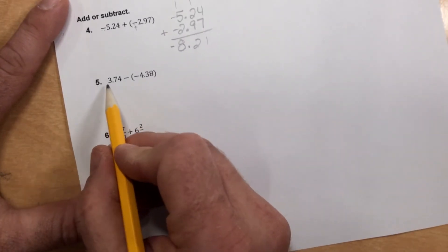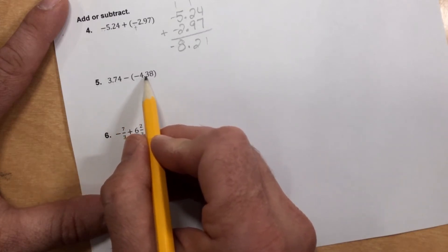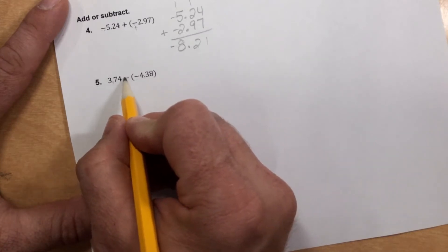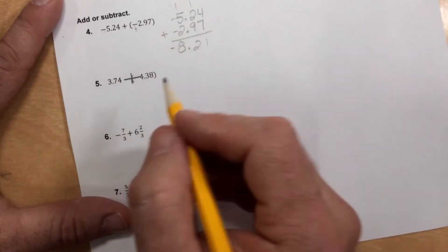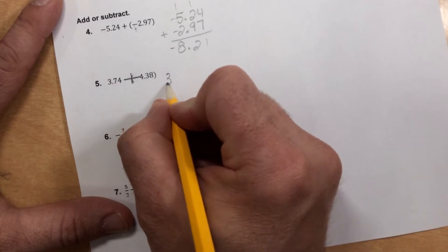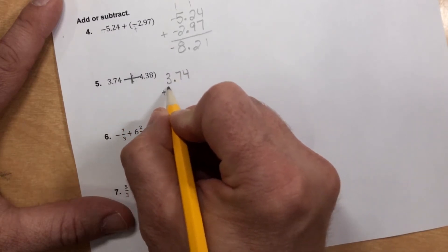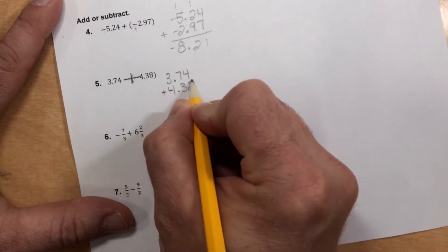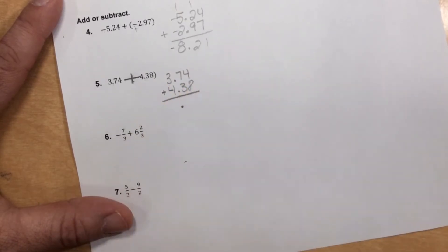Number 5, 3.74 minus a negative 4.38. Remember, we take those two negatives and we make them a big plus. So now what we're doing is just 3 and 74 hundredths plus 4 and 38 hundredths. I'll let you add those together, remembering, of course, to drop your decimal straight down into your total there, your sum.